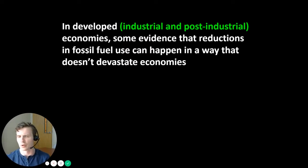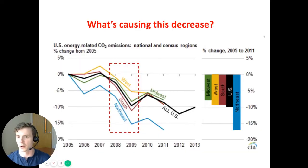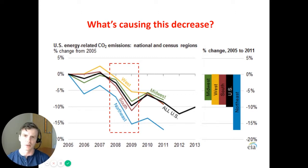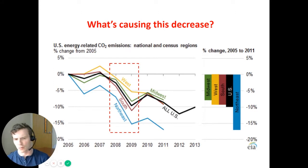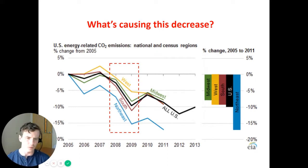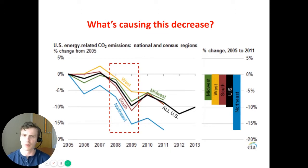In developed and post-industrial countries — and we would put the U.S. in this category — there is some evidence that reductions in fossil fuel use can happen in a way that doesn't devastate economies. From historical evidence over the last several years, we've seen every region of the United States decrease energy-related CO2 emissions, especially in the electric power sector. From 2008 onward, a big chunk of that initially was due to the financial crisis when electricity demand went down quite a bit. But emissions from the electric power sector in the United States have declined because of lower-than-expected demand growth, the switch away from coal to natural gas, and increased penetration of renewables.